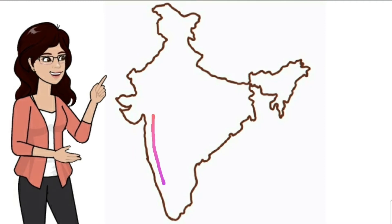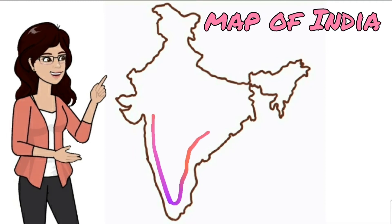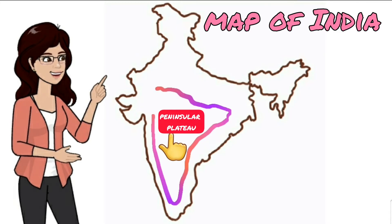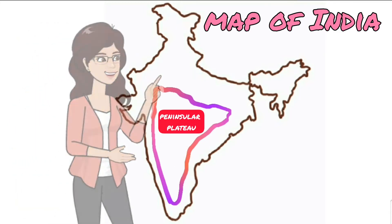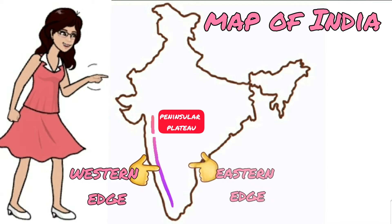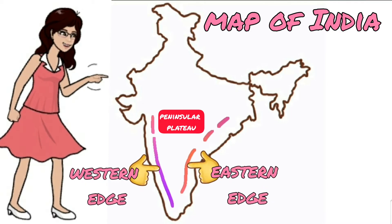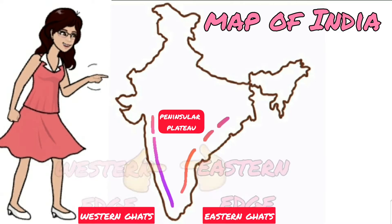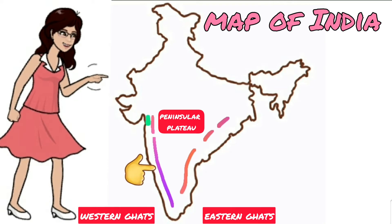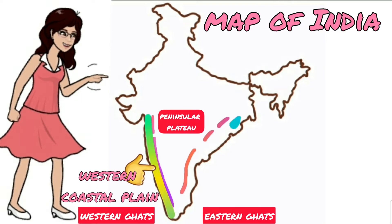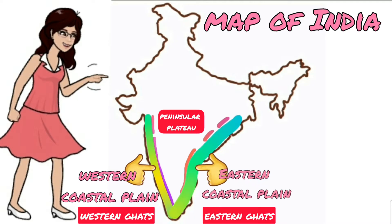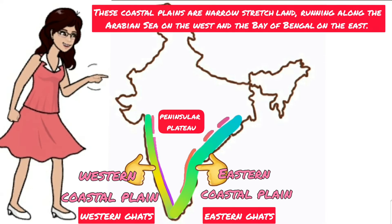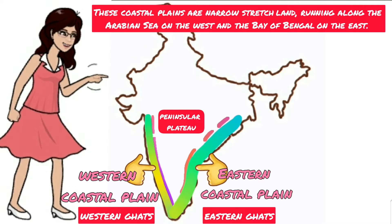To understand it better, let us have a look at the map of India. Here you can see the Peninsular Plateau of India, and these are the western and eastern edges of the plateau, known as the Western Ghats and the Eastern Ghats respectively. West of the Western Ghats, we have the Western Coastal Plain, whereas east of the Eastern Ghats, we have the Eastern Coastal Plain. These Coastal Plains are a narrow stretch of land running along the Arabian Sea on the west and the Bay of Bengal on the east.